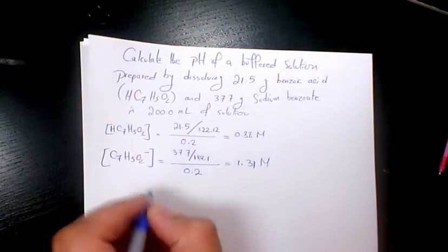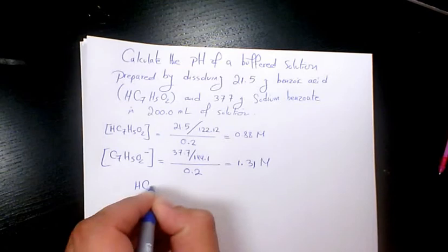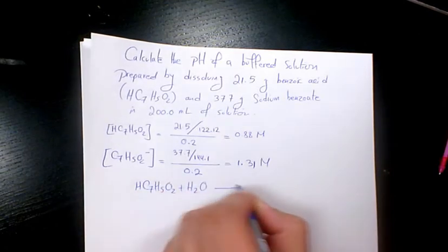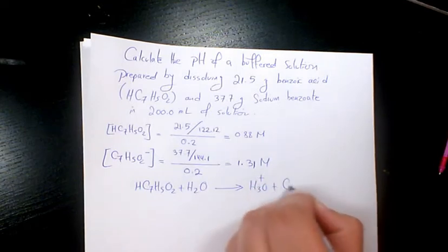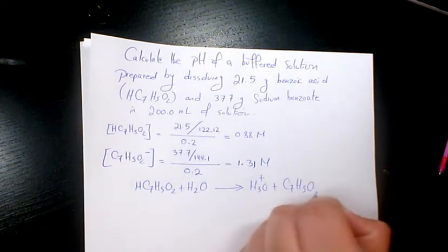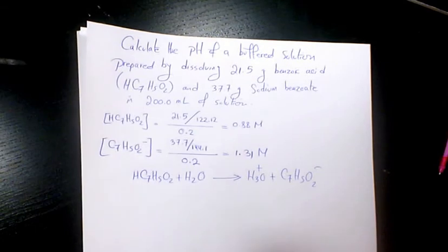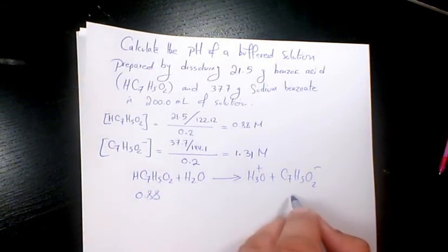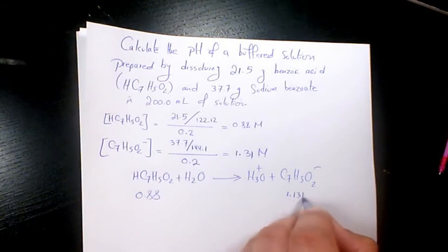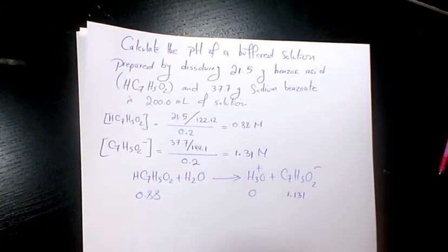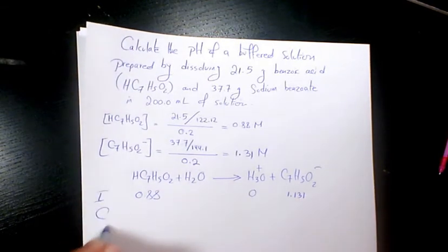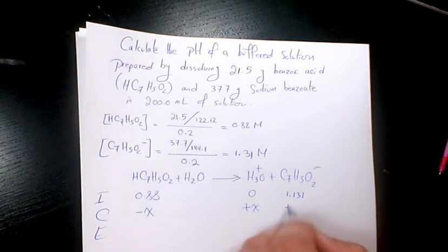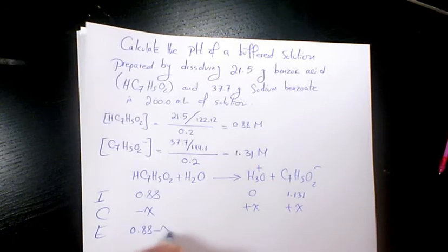If you write the reaction, it's gonna be benzoic acid plus water produces hydronium ion plus benzoate, which is gonna be 0.88 in the beginning here, and we have 1.31, and this one is approximately zero. Initial, change, and equilibrium: change is gonna be negative x, plus x, plus x. You have 0.88 minus x, x, and 1.31 plus x.